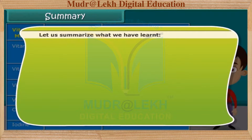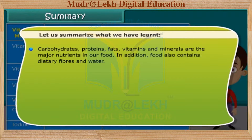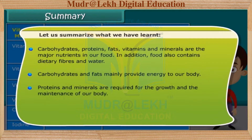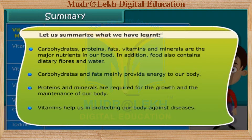Let us summarize what we have learned. Carbohydrates, proteins, fats, vitamins and minerals are the major nutrients in our food. In addition, food also contains dietary fibers and water. Carbohydrates and fats mainly provide energy to our body. Proteins and minerals are required for the growth and the maintenance of our body. Vitamins help us in protecting our body against diseases.